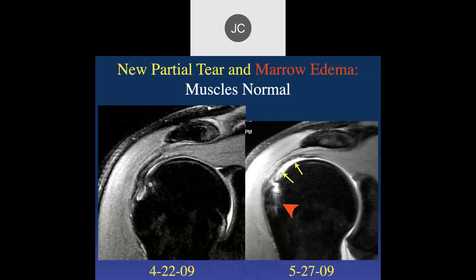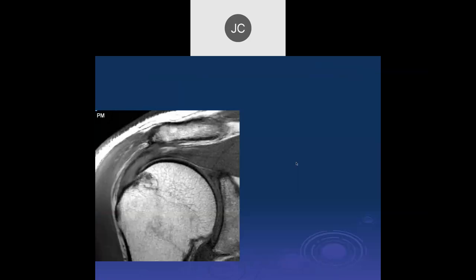You can see the bone edema. Not uncommonly you'll see the joint-side surface fibers tear and proximally retract — there's a name for that partial tear: it's called a lamination tear. We'll come to that.